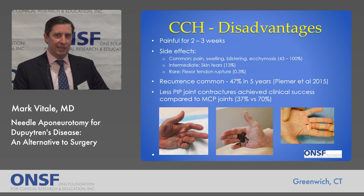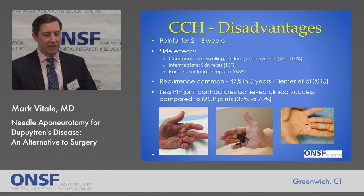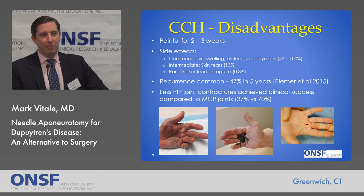We did a study at ONS looking at risk factors for skin tears, and some patients may have as high as a 60% risk of a skin tear after Xiaflex. Rarely, there is the feared complication of flexor tendon rupture, which occurs fortunately in a very small percentage — about 0.3% of patients treated with Xiaflex have been reported to have a flexor tendon rupture. The problem with Xiaflex is that recurrence is common: there's close to a 50% recurrence in five years, although it can be repeated. PIP joint contractures don't respond as well as MCP joint contractures.